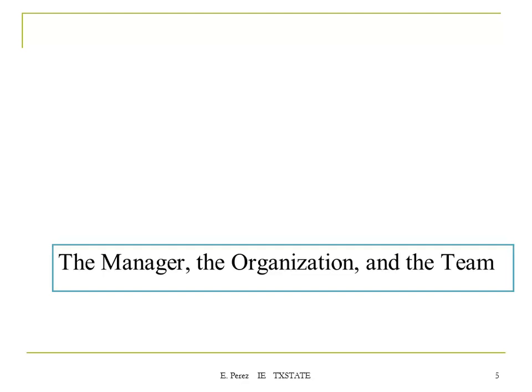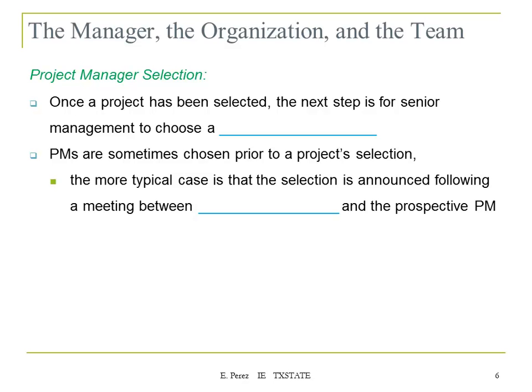Once a project is selected and the company decides to pursue it, the next step for senior management is to choose the project manager who will be in charge. This decision is usually made before getting the project, but the more typical case is that the selection is announced following a meeting between senior management and the prospective project manager, where they find the best fit.